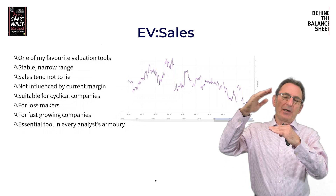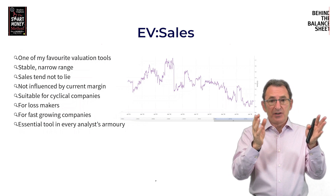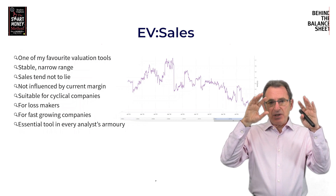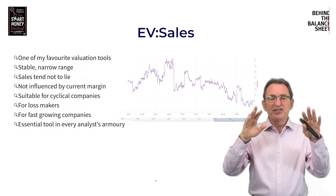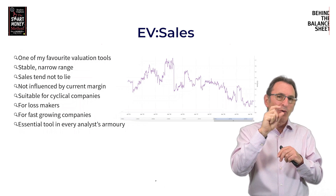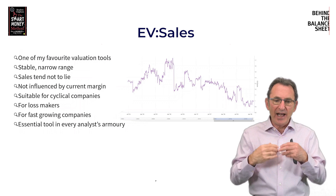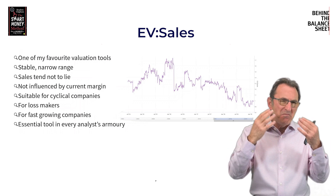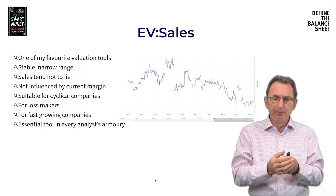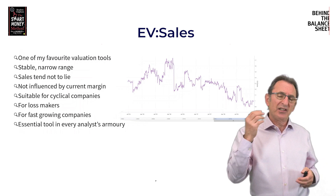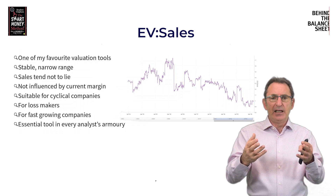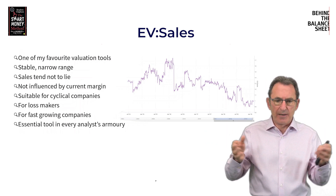It's also a really big number. You've got the enterprise value divided by the sales number, and because the sales number is quite large, the EV to sales tends to be quite a low multiple and trades in quite a narrow range. That's why I like it — it's a much more stable measure than an earnings-based or EBITDA-based measure, especially for cyclical companies. Looking at EV to sales gives you a much better feeling for where the valuation lies within its long-term range.